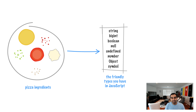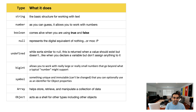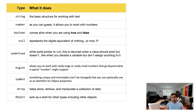Some of these types are probably familiar to you from previous videos, and some will not be — we'll cover those at a later point. Here's a quick look at what each type does: string is all about working with text; number is all about working with numbers; boolean represents true and false values; null represents nothing, the digital equivalent of nothing; undefined is similar to null but is returned when a value should exist but doesn't, like when you declare a variable but don't assign a value; bigint allows you to work with really large numbers; symbol is a unique identifier used to generate a unique value that keeps things from colliding; array is all about storing, retrieving, and manipulating a collection of data; and object is a generic catch-all — a shell for other types, including other objects.